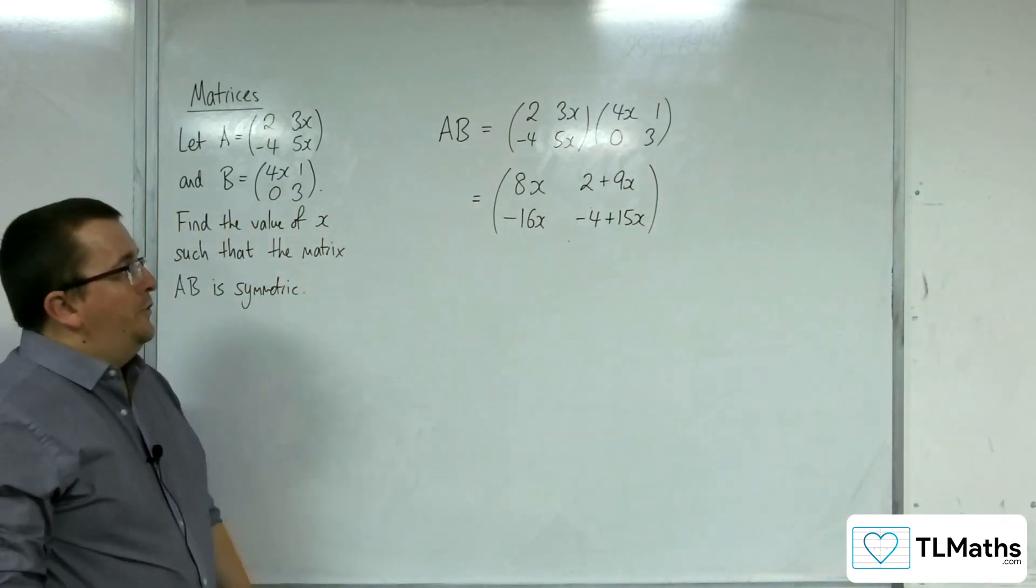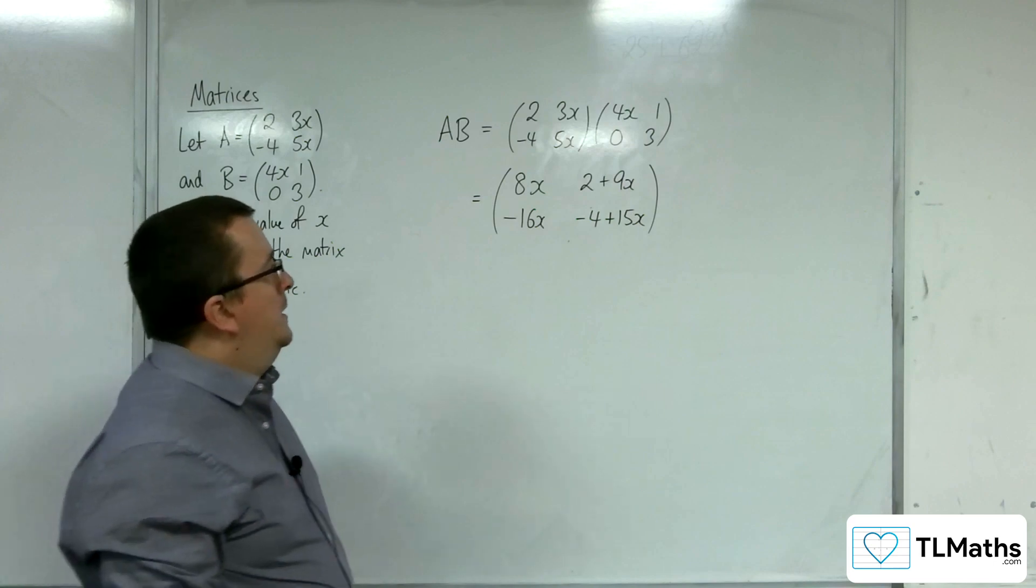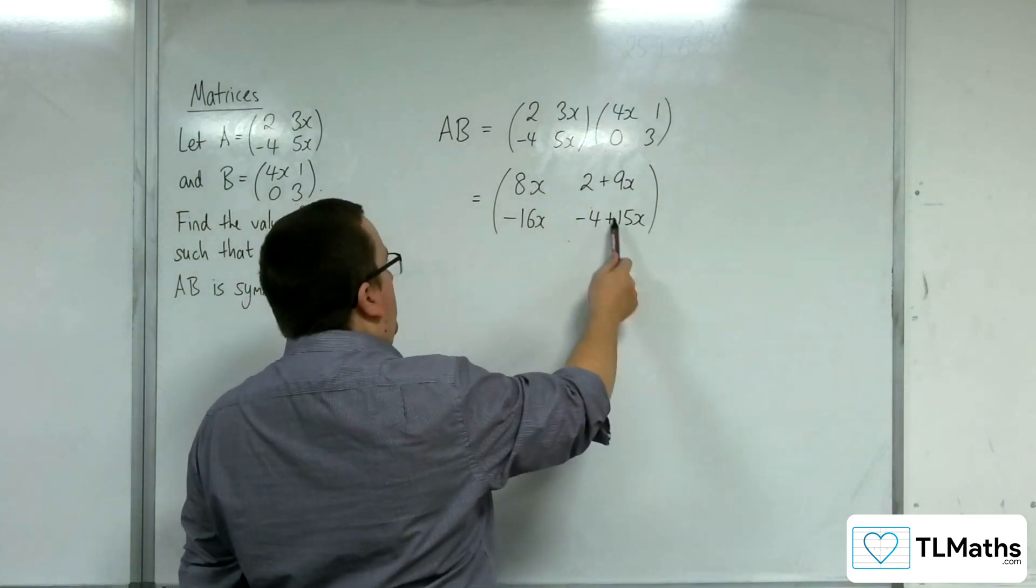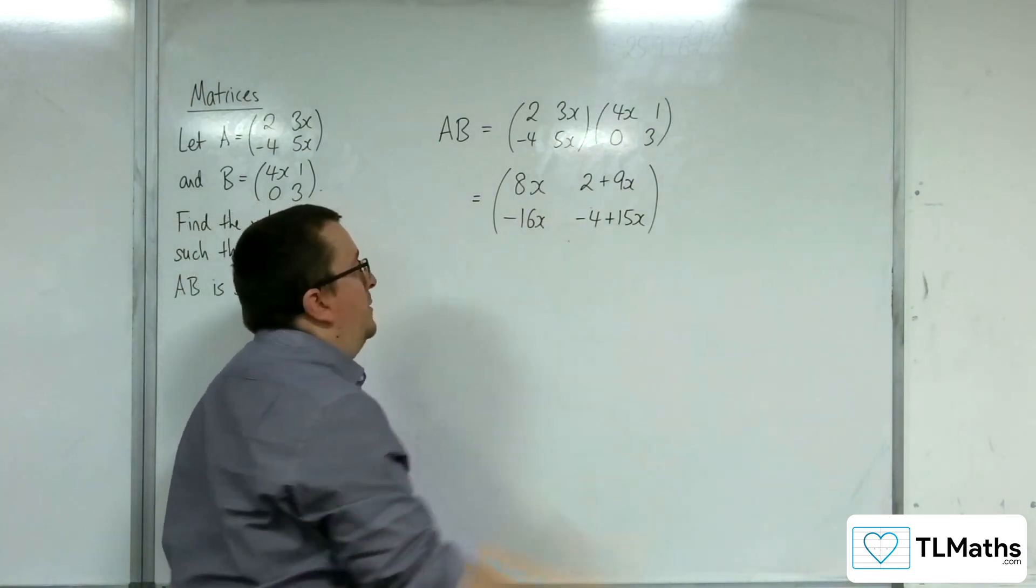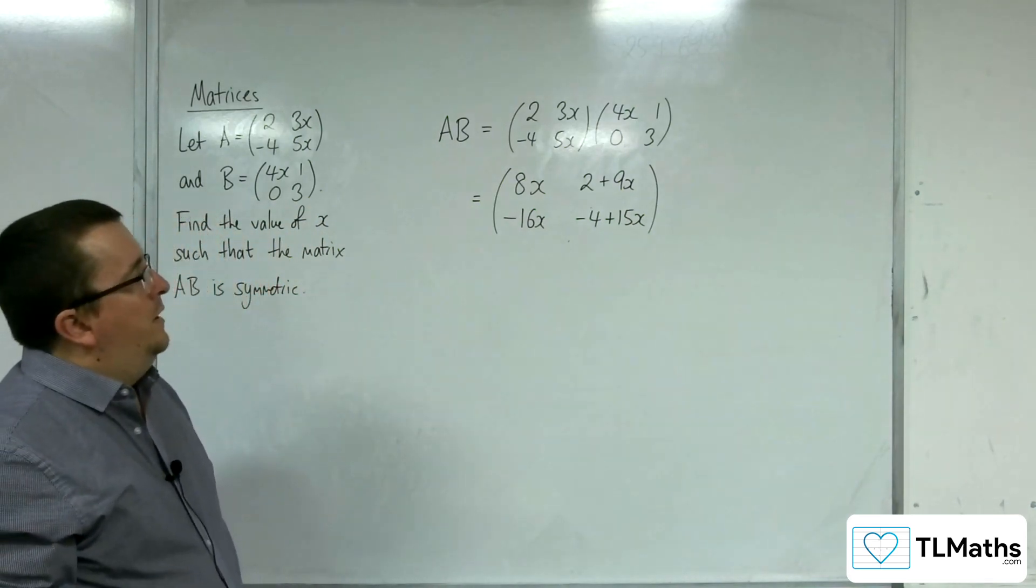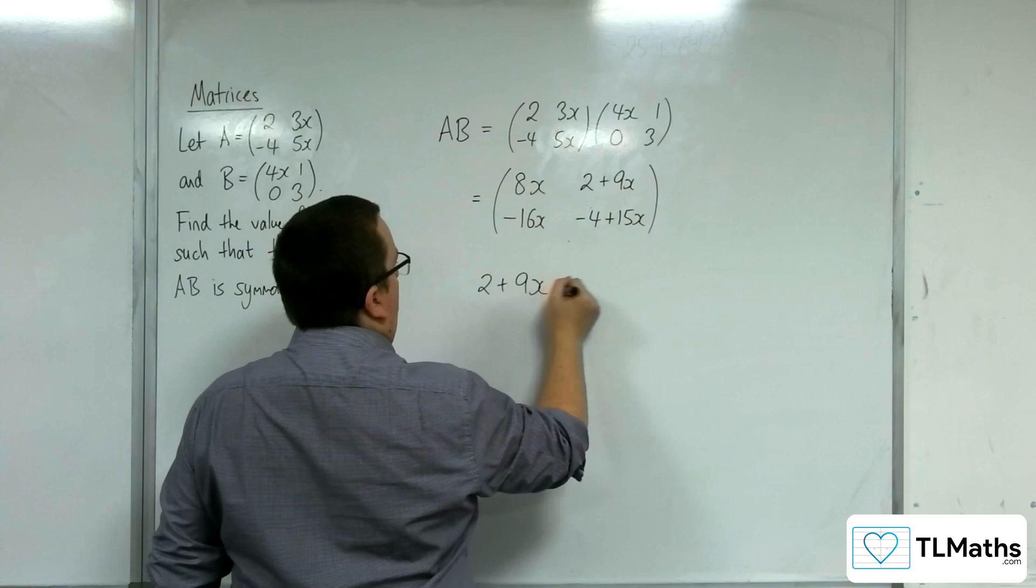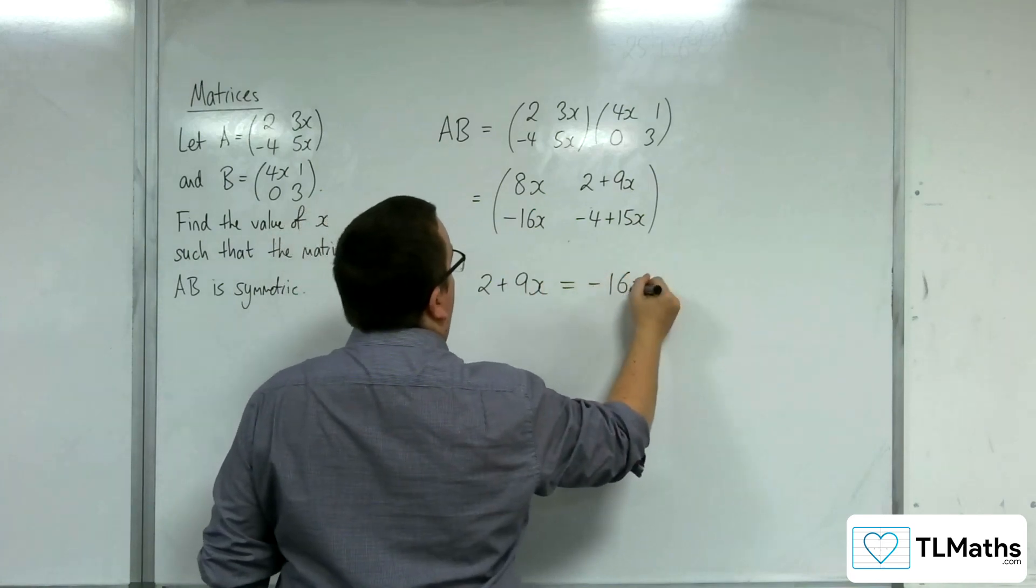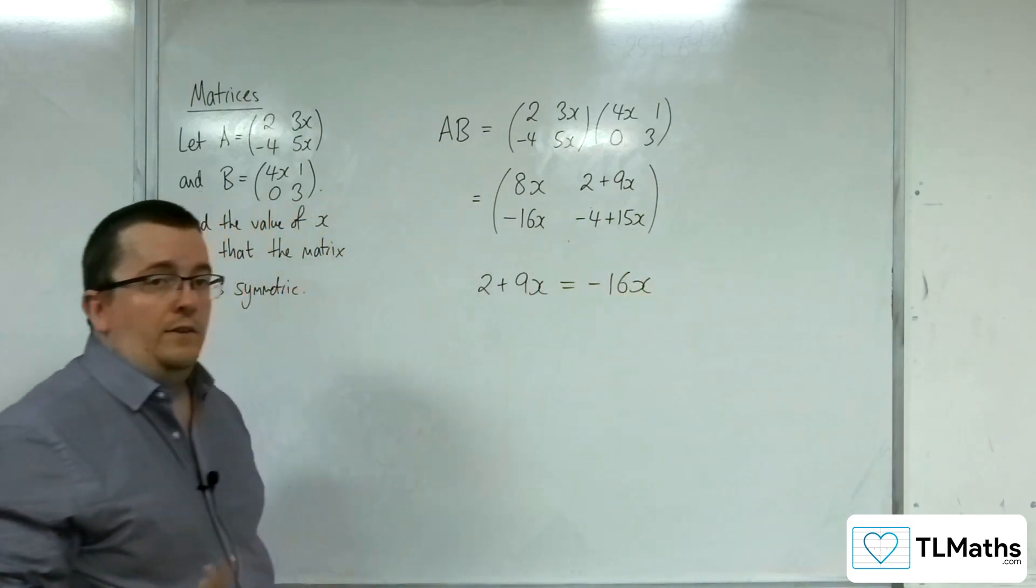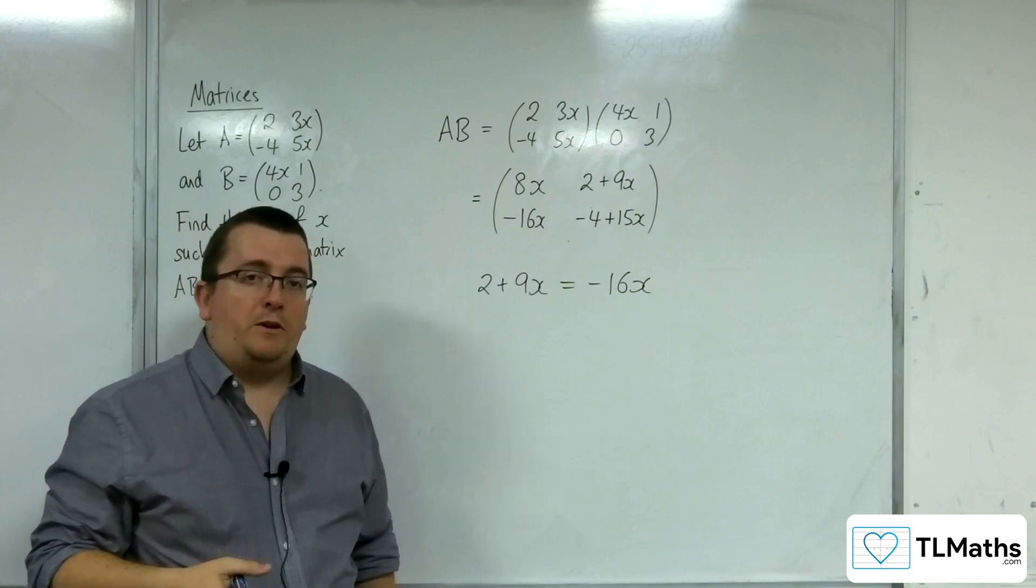Now in order for this matrix to be symmetric, these values here, that leading diagonal, can be any values we like. What we need to have, however, is that the 2 plus 9x is equal to the minus 16x. If that is the case, then we know we have a symmetric matrix.